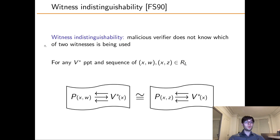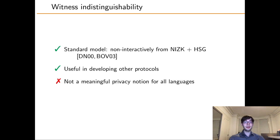Witness indistinguishability is an interesting privacy notion that considers what happens when you run the proof using distinct witnesses. Formally, for any malicious verifier V*, the transcript after running the protocol with some witness W is indistinguishable from the transcript if the protocol were run with another witness Z. Unlike zero-knowledge, witness indistinguishability can be achieved non-interactively in the standard model — by combining a CRS NIZK with a hitting set generator, we get a NIWI, or non-interactive witness indistinguishable proof. These NIWIs are very useful in developing more complex protocols and proof systems.